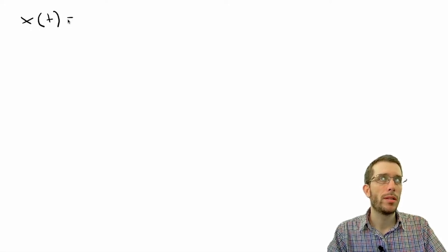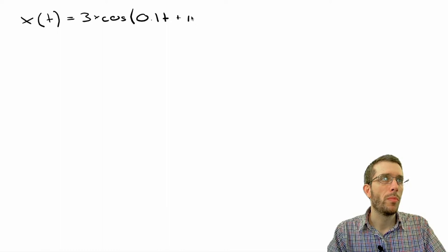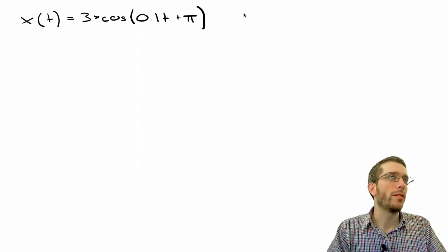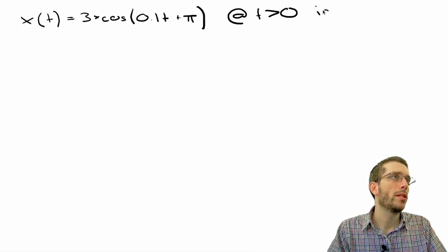Let me give you an example. Let's say you have the following problem. You are given a function of the form x as a function of time is 3 times cosine of 0.1t plus pi. In physics, this could be the equation of a simple harmonic motion. And the question is at what time bigger than zero is x equals 2.5.